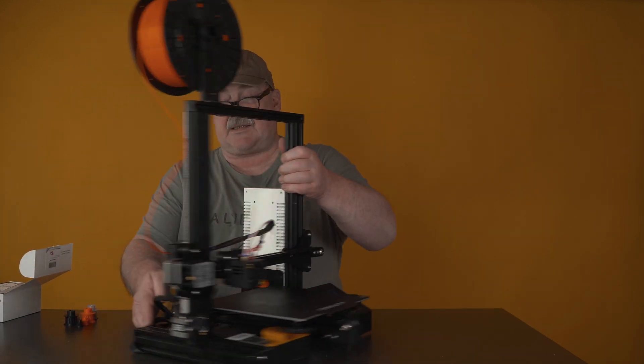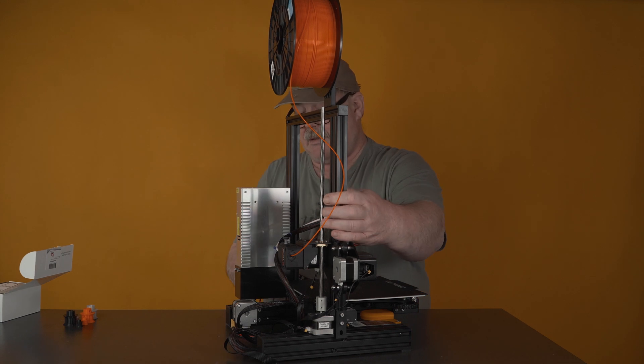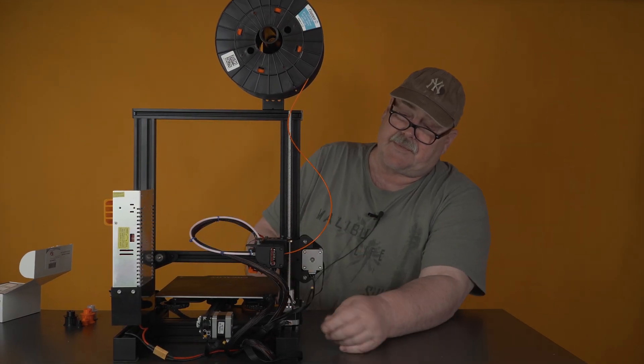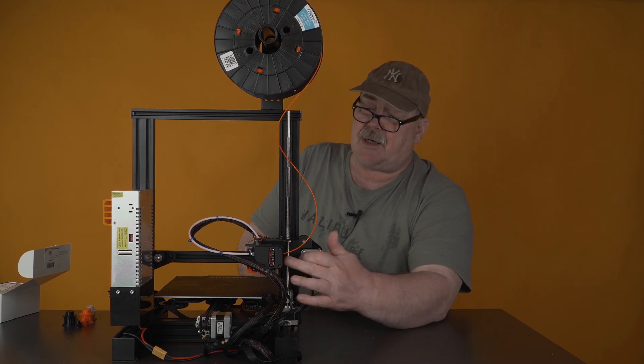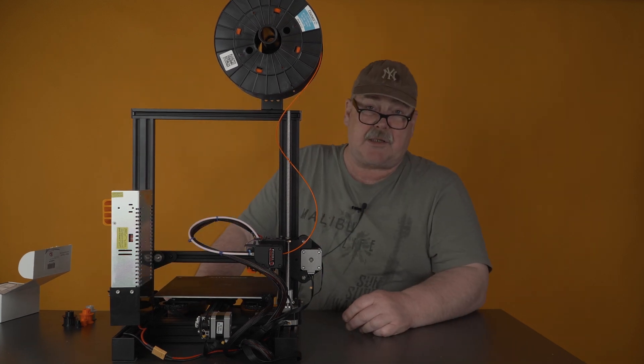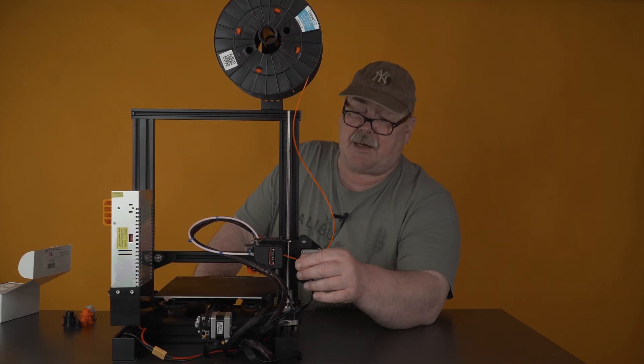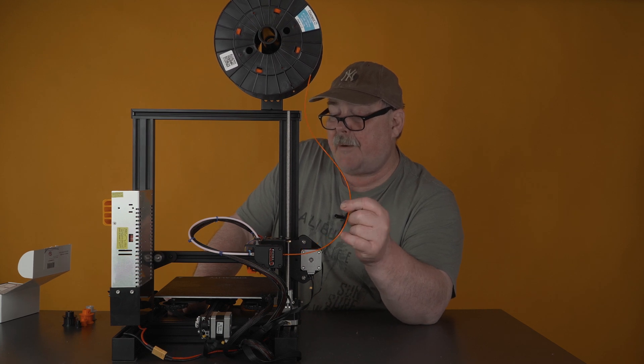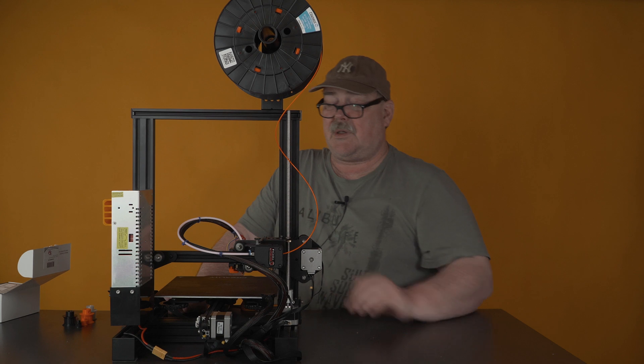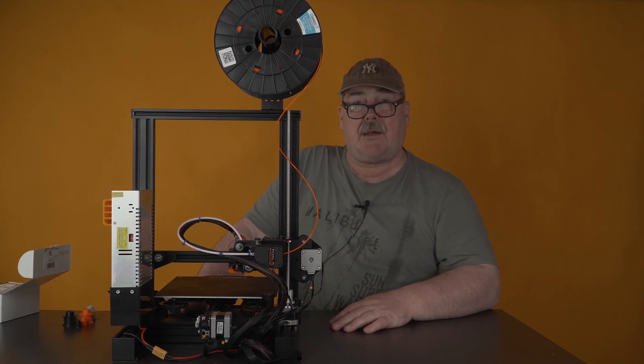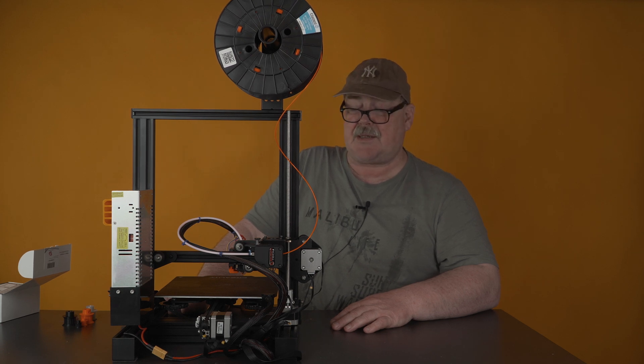So the installation of the Bondtech was very easy. It fits here. It comes with a bracket. And you can even use it together with an MK3 extruder and have a direct drive. I still use it here with my Ender 3 Bowden tube. And I want to show you some of the results I had when I did print with this extruder.